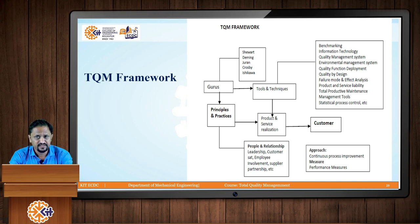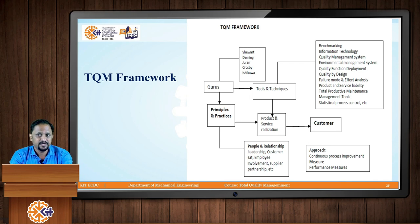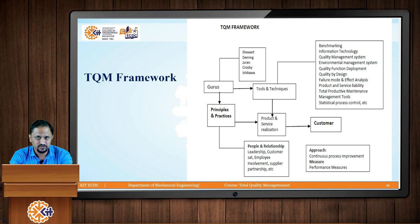Various tools and techniques include benchmarking, use of information technology, quality management systems like ISO 9000, environmental management systems, quality function deployment, quality by design, FMEA (failure mode and effects analysis), product and service liability, total productive maintenance, and management tools like Kaizen, Six Sigma, and statistical process control.